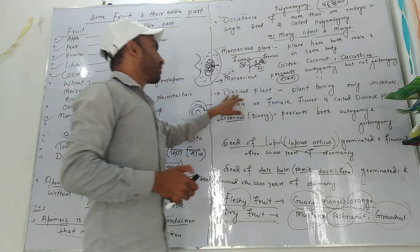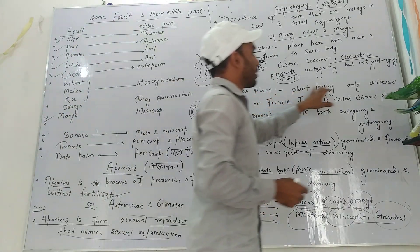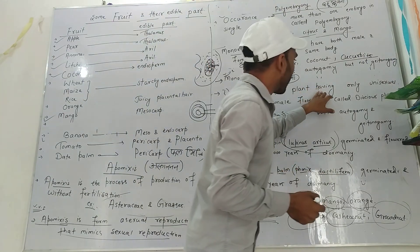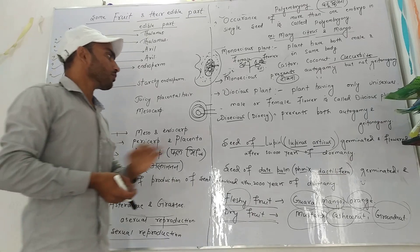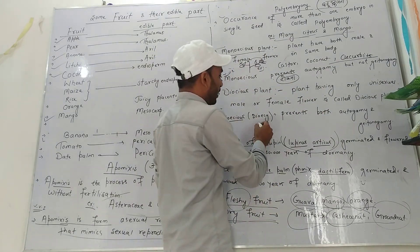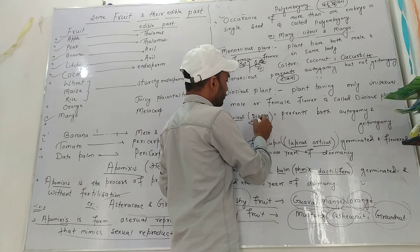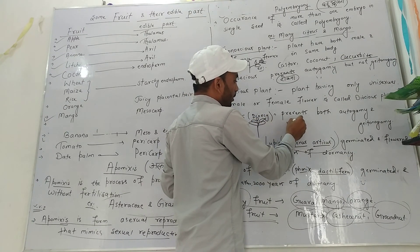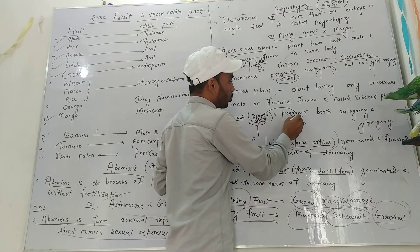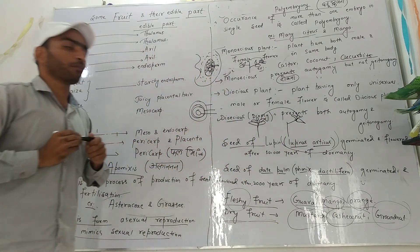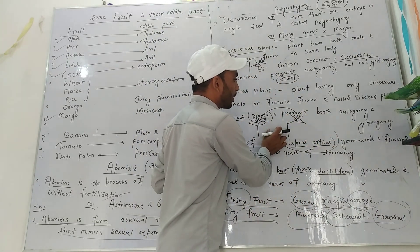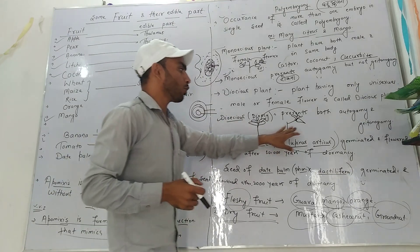The next is dioecious plant. Dioecious plants prevent both autogamy and geitonogamy. One plant has only one type of flower — male or female. If the plant has only one flower type, then autogamy will not occur, and geitonogamy will also not occur because it is the same plant.